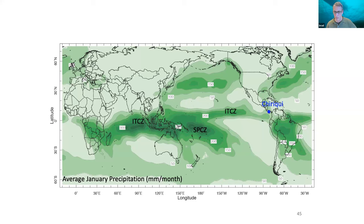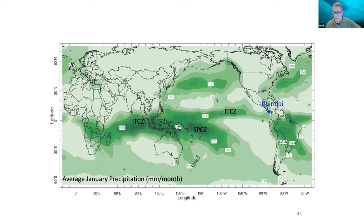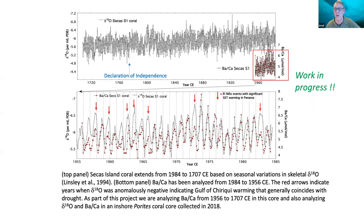This map highlights average January precipitation — the dry season in Panama — where green areas are very wet. The Intertropical Convergence Zone (ITCZ) band of rain goes all the way around the globe. In Panama's dry season, the ITCZ sits a little south of Panama. During El Niño conditions, the ITCZ is held south by the warm water in the eastern Pacific Galápagos area, producing very dry conditions in Panama and slightly warmer water. We should be able to use these two coral tracers — oxygen isotopes and barium — to look at drought and relative warmth in Panama to assess El Niño frequency.